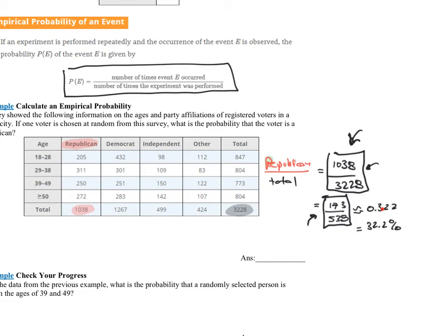I could either write the answer as a reduced fraction, the original fraction, a decimal, or a percentage. I would just read the problem to understand what they wanted. This one didn't specify, so we have to assume it's a fraction. But what makes sense to me more in this real-world problem would be the percentage. 32.2% of the people in this city were Republican.